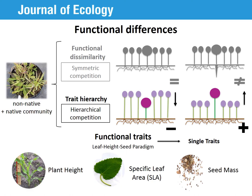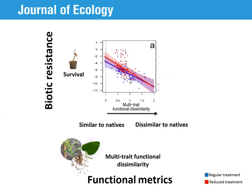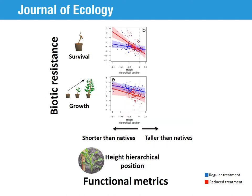We modeled biotic resistance changes for all three vital rates in relation to trait differences through mixed effect models. Biotic resistance depended on both the functional difference metrics and on the vital rates analyzed. For example, regarding the survival of the non-natives, functionally distinct ornamentals underwent less mortality due to biotic resistance, which is evidence of the role of niche differentiation in filtering successful ornamental species, especially in the establishment stage. However, metrics based on trait hierarchies provided consistent results across most vital rates, for example in both survival and growth. Taller ornamental individuals were predictably better at tolerating biotic resistance and were thus more successful in surviving and growing in communities.